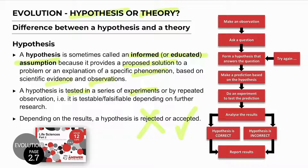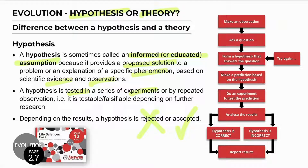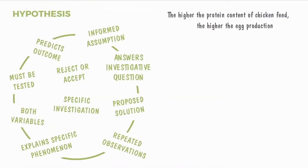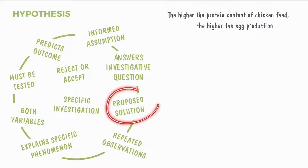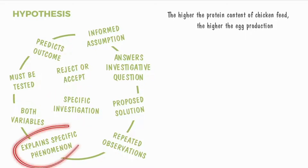A hypothesis forms part of scientific investigation. A hypothesis is a proposal or suggestion to explain observations — an informed assumption. It predicts the outcome of an investigation and is not a question, but answers an investigative question. For example: if you feed a chicken with more protein, will it lay more eggs? The hypothesis is the statement that explains the question — a proposed solution. It involves repeated observations and is always proposed before testing and research, so it must still be tested to prove true or false. It focuses on a specific investigation and explains a specific phenomenon or observation.